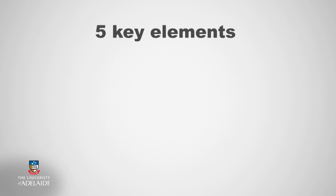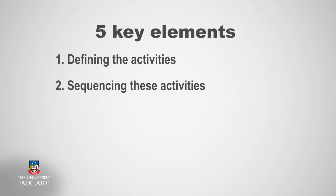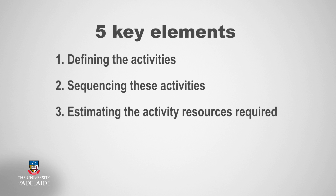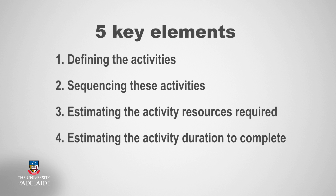There are five key elements associated with time management of a project. These steps are fairly intuitive, so let's identify the key processes before exploring each in more detail. They are: defining the activities, then sequencing these activities, estimating the activity resources required, estimating the activity duration to complete, and developing the schedule. It is important to note that the development of the schedule can only occur once all of these processes have been completed.